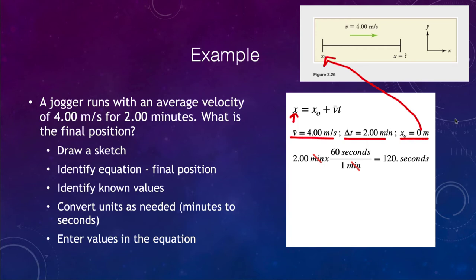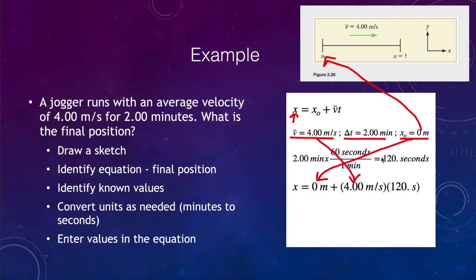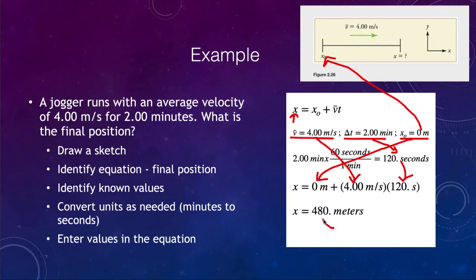Now let's enter our values into the equation. We have the initial position of zero, the velocity of four meters per second, and the time of 120 seconds. Completing the calculation, our position is 480 meters. Regarding significant figures, we were given three significant figures in each number — some values like 60 seconds per minute are exact — so our final answer has three significant figures. We add the decimal point to clarify that the zero is significant, giving us 480. meters.